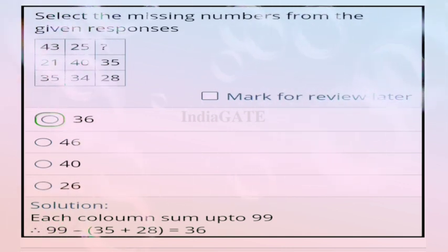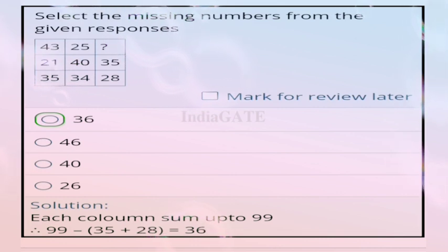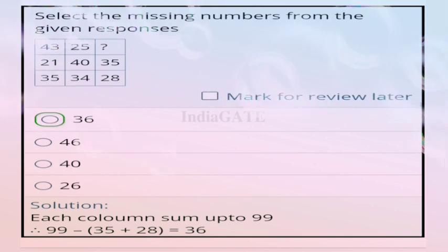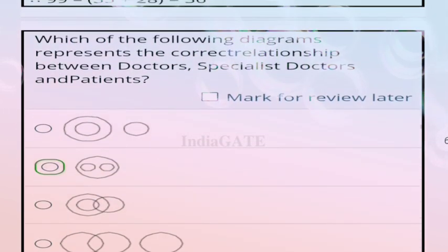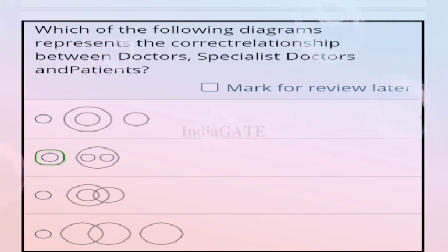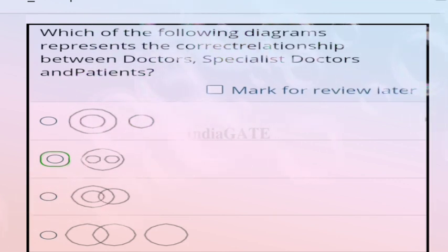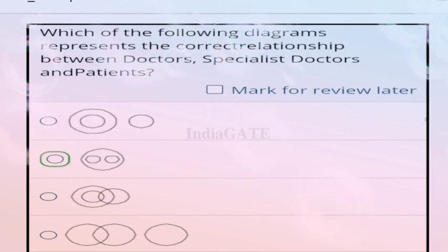Next question: select the missing number from the given matrix. Correct answer is option A, 36. Each column sums to 99: 99 - 35 - 28 = 36. Next question: which diagram represents the correct relationship between doctors, specialist doctors, and patients? Correct answer is option B.